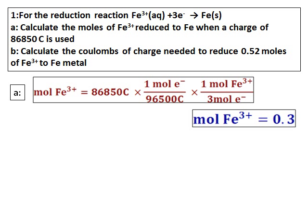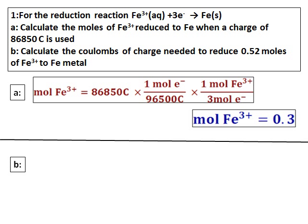Since 1 mole of Fe formed corresponds to 1 mole of Fe³⁺ reduced, the moles of Fe³⁺ reduced equals 0.3 moles.